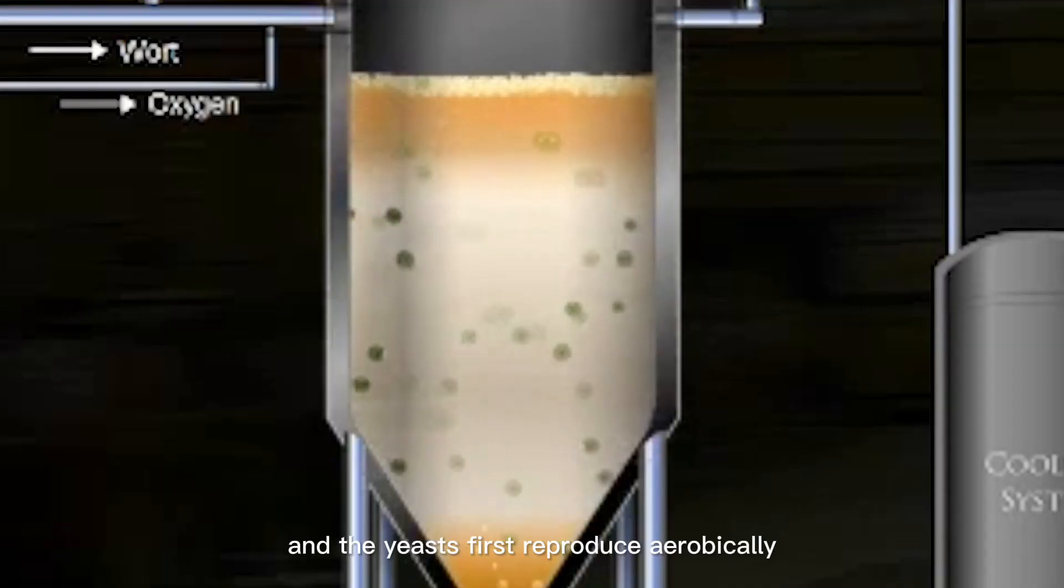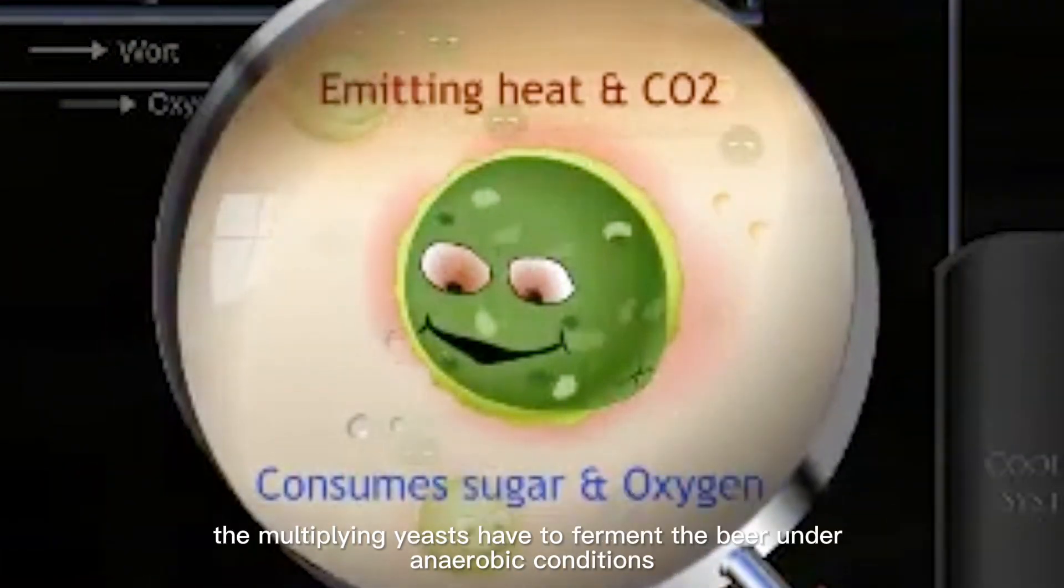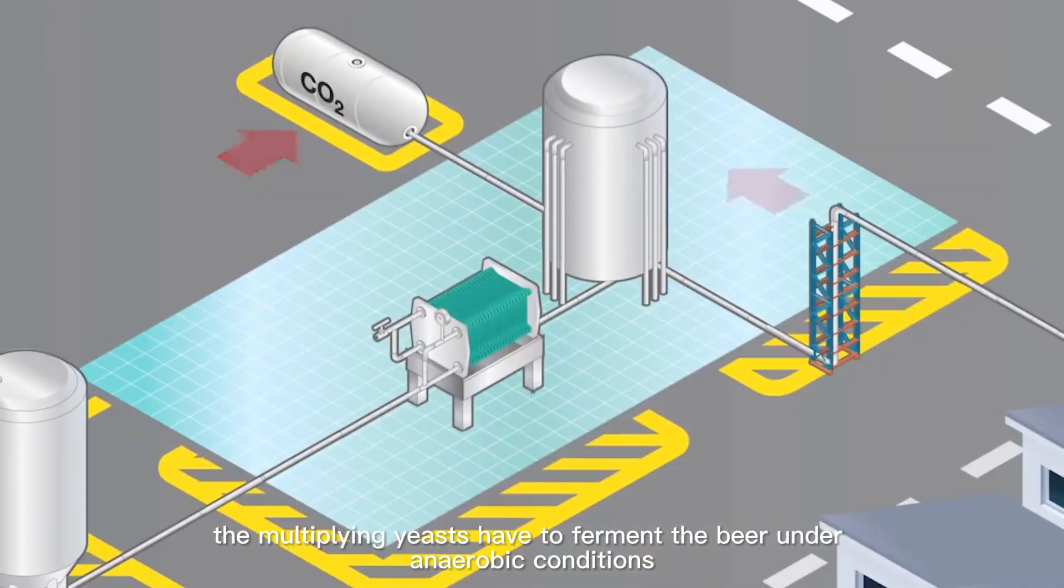The aerated wort enters the fermenter, and the yeast first performs aerobic reproduction. When the oxygen is used up, the yeast after reproduction will ferment the beer under anaerobic conditions.